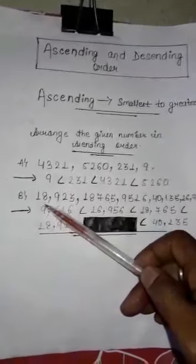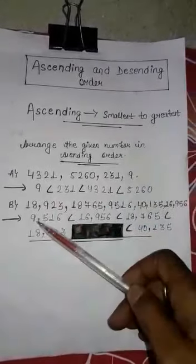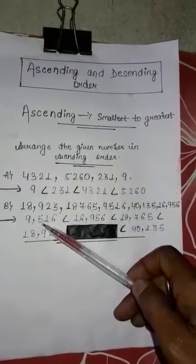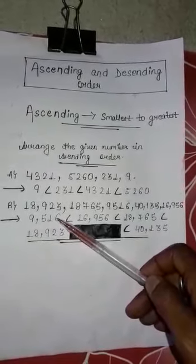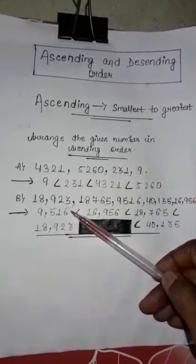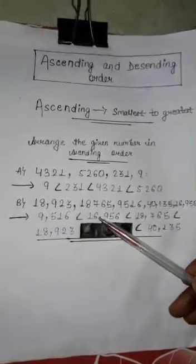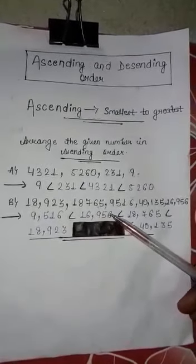Now see the second one. This is the question. Which is the smallest? The smallest number is 9,560. The next number greater than 9,516 is 16,956.